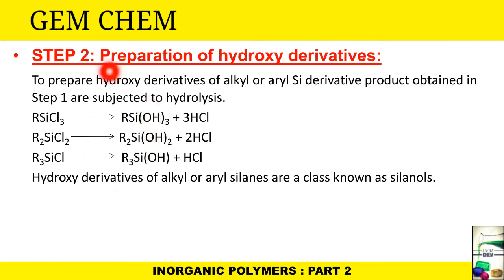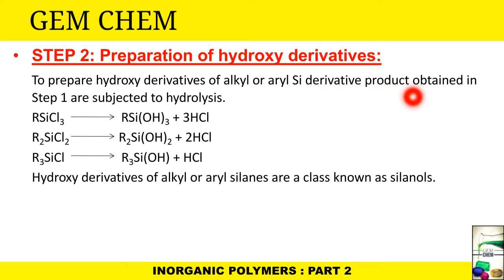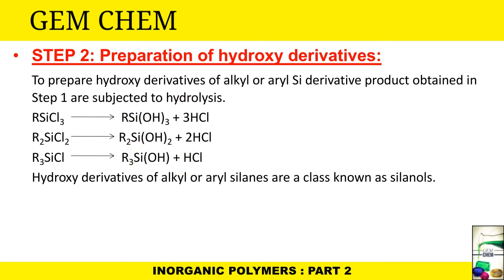The next step is preparation of hydroxy derivatives — that is, we perform hydrolysis. To prepare hydroxy derivatives of alkyl or aryl silyl derivatives, the products obtained in Step 1 are subjected to hydrolysis. HCl is eliminated and the corresponding hydroxy derivatives are obtained. This class of compounds — hydroxy derivatives of alkyl or aryl silanes — is known as silanols.